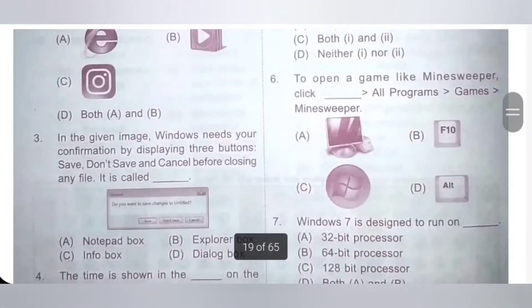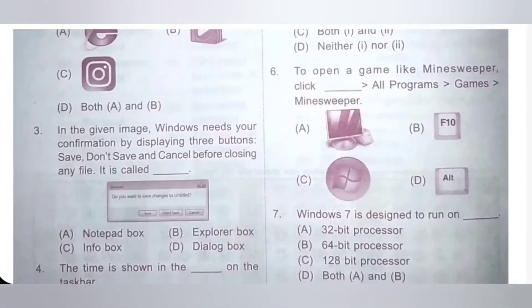Question 6: To open a game like Minesweeper, click dash — All Programs — Games — Minesweeper. So to open a game like Minesweeper, you click option C: Windows — All Programs — Games — Minesweeper. Option C is the correct answer.